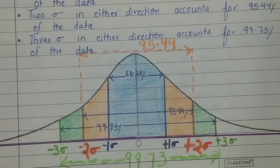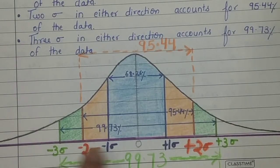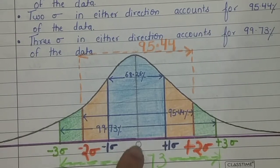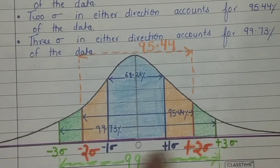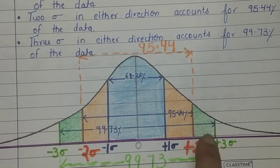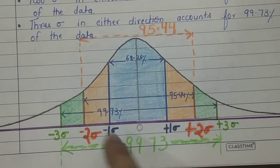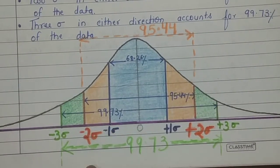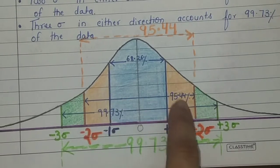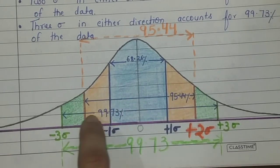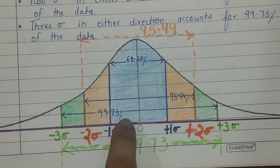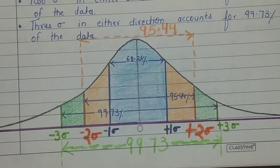And if we go three standard deviations in both directions from the center — that is, from minus three standard deviations to plus three standard deviations (shown in green, which includes the orange and blue regions inside) — then 99.73% of the data is represented. Almost all data falls under plus and minus three standard deviations, accounting for 99.73% of the whole data. This is the fourth and last property of standard deviation.